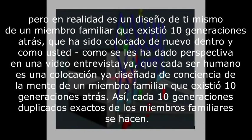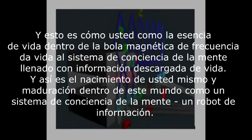As I've been given perspective in a video interview already: each human being is already a designed mind consciousness placement being of a family member that existed ten generations back. Every ten generations, exact duplicates of family members are made. This is how you as the life essence within the magnetic frequency ball give life to a mind consciousness system filled with downloaded information — and how you birth yourself and come of age within this world as a mind consciousness system, a robot of information.